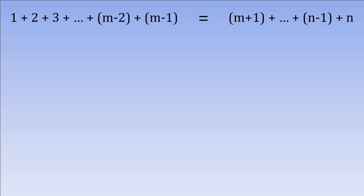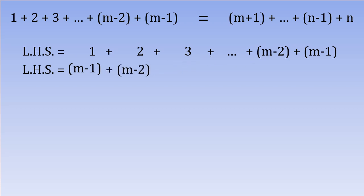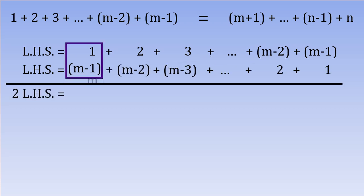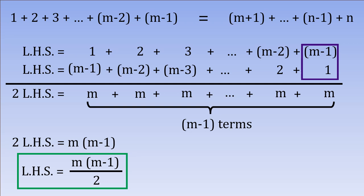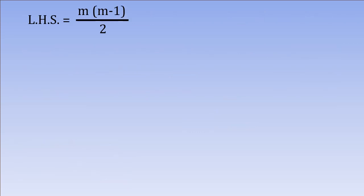Let us first try to simplify the left hand side. We can rewrite the left hand side by reversing the order of the numbers. M-1 goes here, M-2 goes there and so on. We see that each pair of terms within the box adds up to M and there are M-1 such terms. Following this procedure, the left hand side simplifies to M times M-1 all divided by 2.